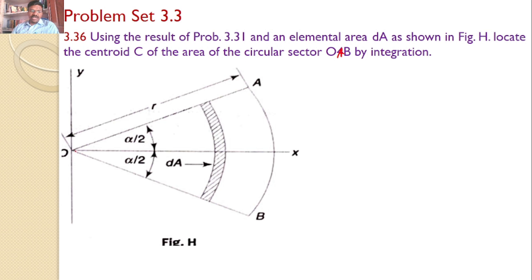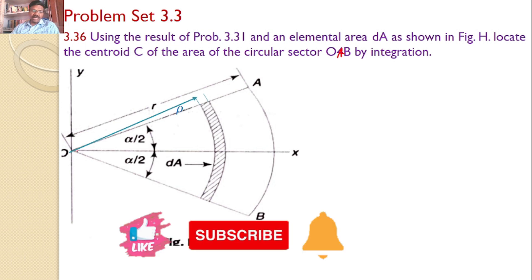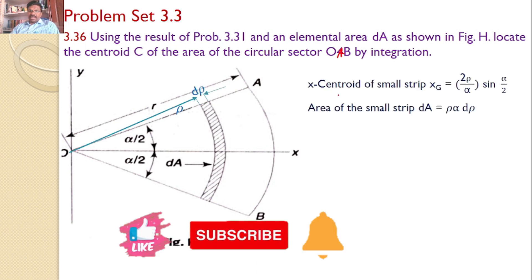Our interest is to find the centroid for this circular sector. For that, let us consider a small strip — this small strip is already indicated here. Consider a small circular strip at a distance of rho from the center, and let the width of the strip be d-rho.